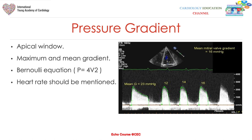Moving on to measuring the mean diastolic pressure gradient: use the apical windows, apply the maximum velocity to the Bernoulli equation to get the millimeter mercury conversion. Heart rate must be noted with this measurement as it significantly affects the values — heart rate over 80 starts to affect pressure measurements across the mitral valve. Trace from the beginning of the waveform to the closure of the mitral valve.